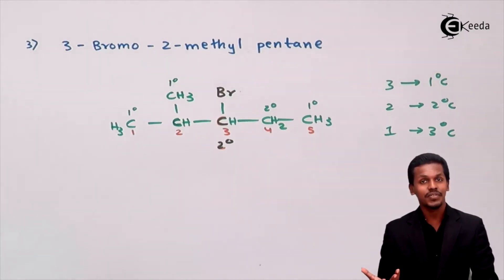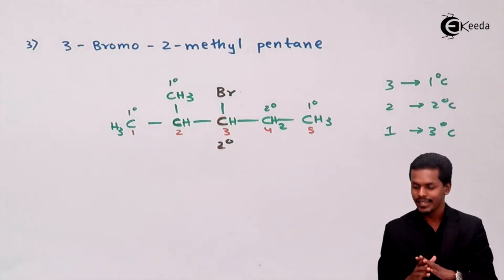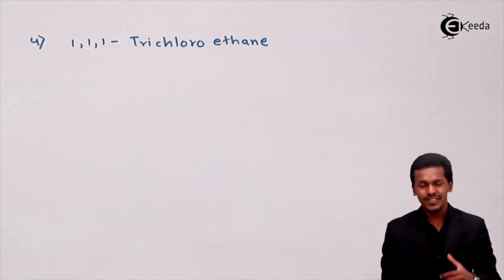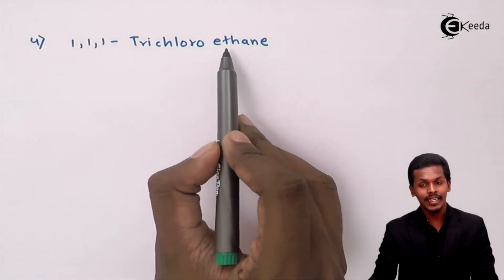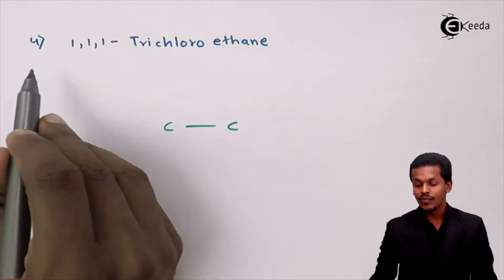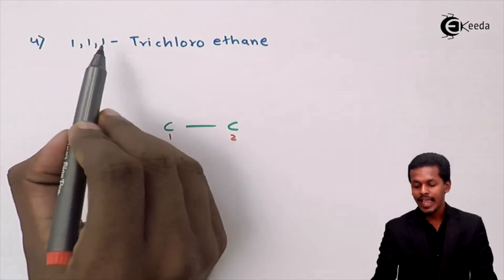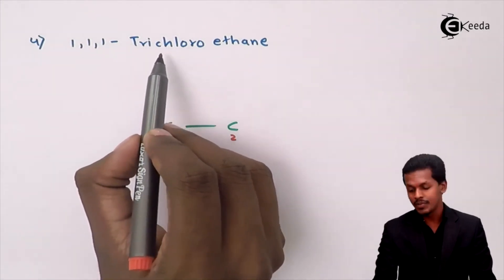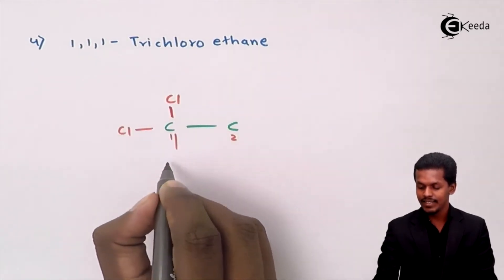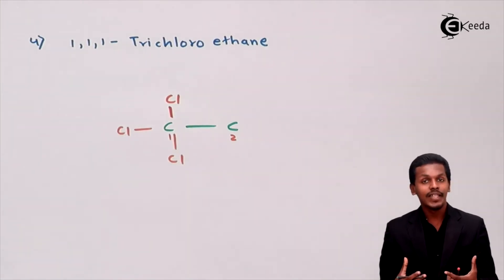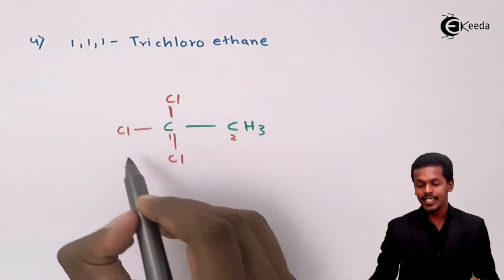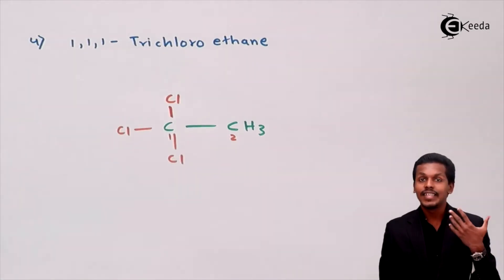In this lecture we have discussed how to draw the structure from the IUPAC name and also determined the type of halogen derivative. Now let us move on to the next example. The parent alkane is ethane, so it consists of two carbon atoms. There are three chlorine atoms all attached to the first carbon atom, giving the structure CH3-CCl3. This is a trihalogen derivative of alkane.